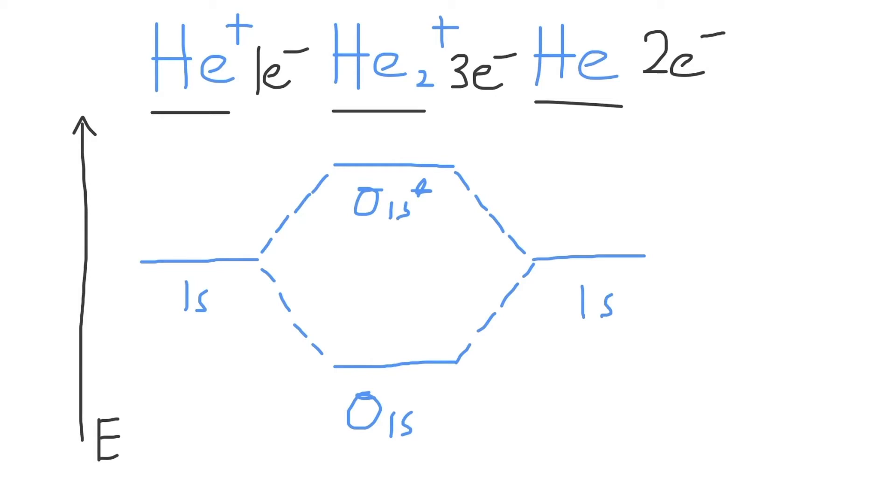So we will now fill in our molecular orbital diagram. And also, just a quick note, this cation could go on either side of the diagram. It doesn't matter which. So we can now fill in the diagram.